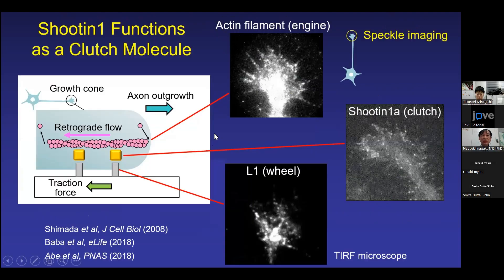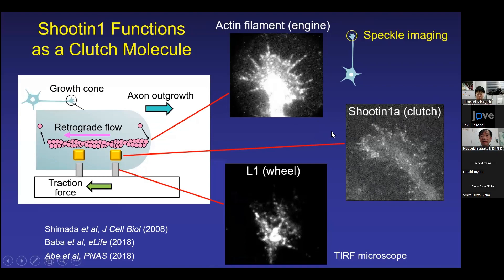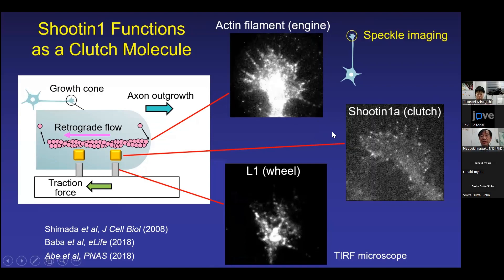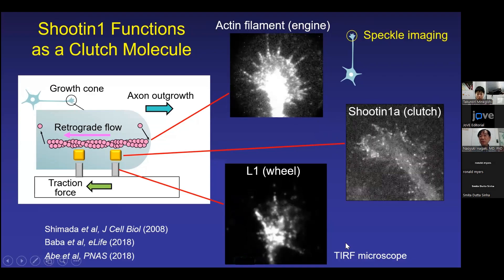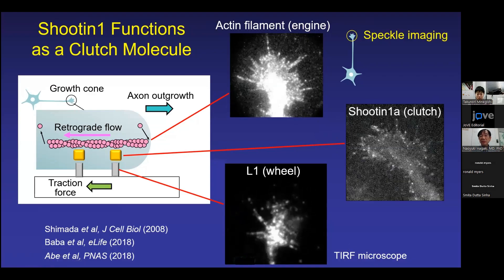Speckle imaging can provide key information to explain how shootilin promotes axon outgrowth. We already know that shootilin functions as a clutch molecule that links actin flow and cell adhesion molecules such as L1. Using speckle imaging analysis, we can observe the movement of all these components — actin filaments, shootilin, and L1 all undergo retrograde flow.